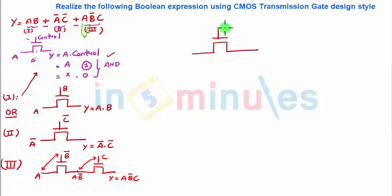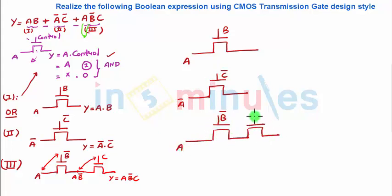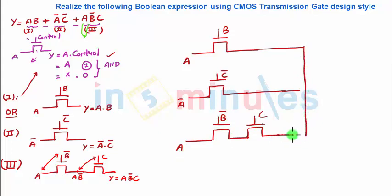Now let's connect all pass transistors in parallel. The first term has control B and input A; the second term has control C̄ and input Ā; the third term has A in series with B̄ then C. All three branches are connected in parallel, giving the output Y — but this is still a realization using pass transistors only.